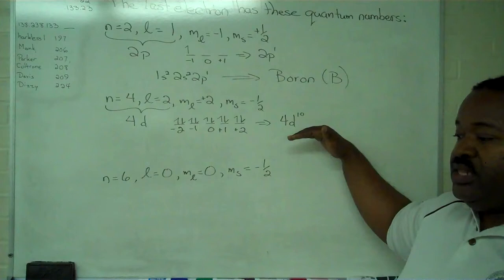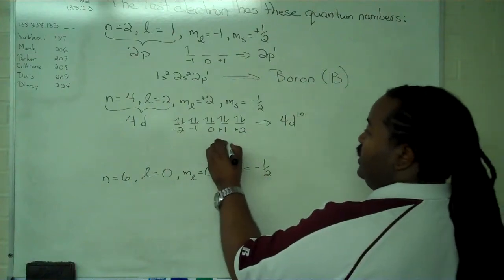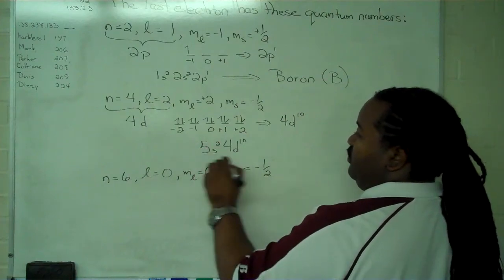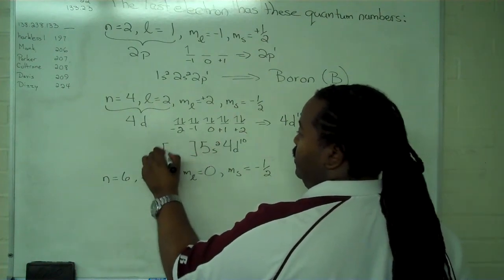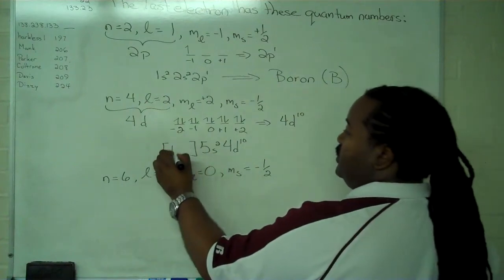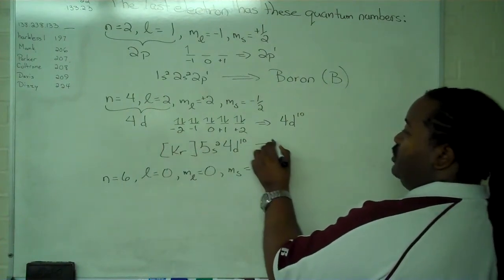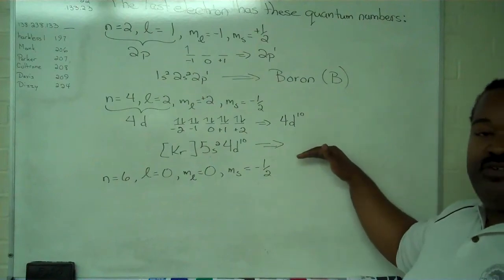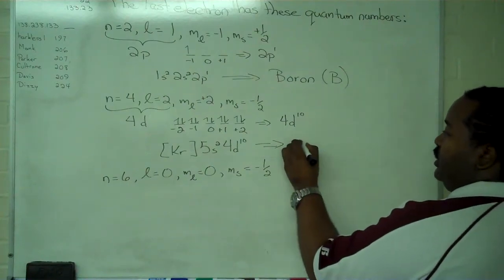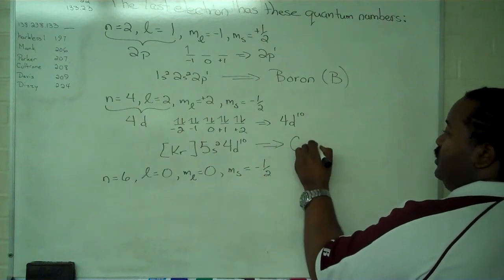Once we have that in place, it's straightforward to use the Aufbau principle by knowing what must fill in beforehand. There's a 5s, 2. And then we can look at a periodic chart and find our noble gas. In this case, it's krypton. And once we have all of that information for our complete configuration, we can determine that our element is cadmium.